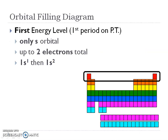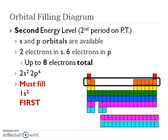Looking at the first energy level — or the first period on the periodic table — this is only going to be the S orbital, and S orbitals can only hold two electrons. So we'll have either 1S1 or 1S2. At the second energy level, we now have S and P orbitals available: two electrons in the S and six in the P, for a total of eight electrons in that second period. The 2S and 2P are filled, but remember the 1S2 has to be filled first because it has lower energy.